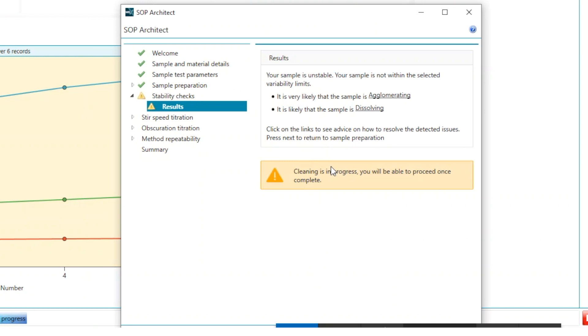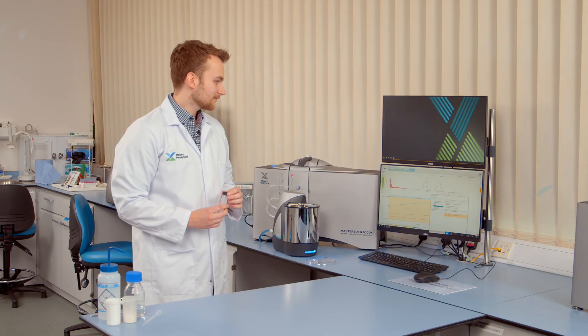Now if we look back into the SOP Architect feature we'll be able to see what the feedback is. So the SOP Architect is informing us that our sample is not stable and is in fact likely to be agglomerating or possibly dissolving. So what we'll need to do now is try and fix our dispersion by perhaps adding in an additive which we'll do to reassess the stability checks.